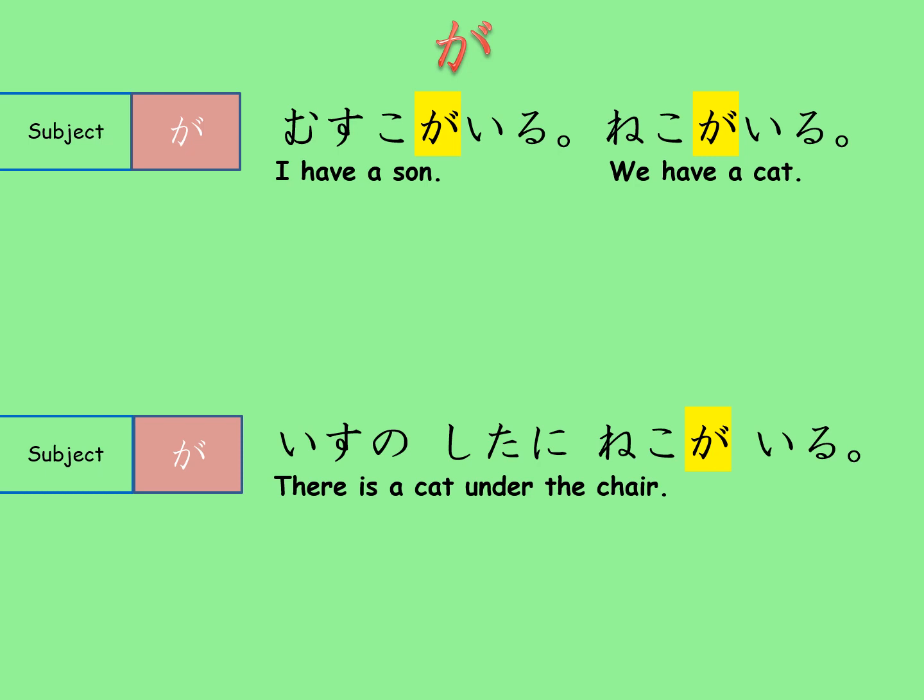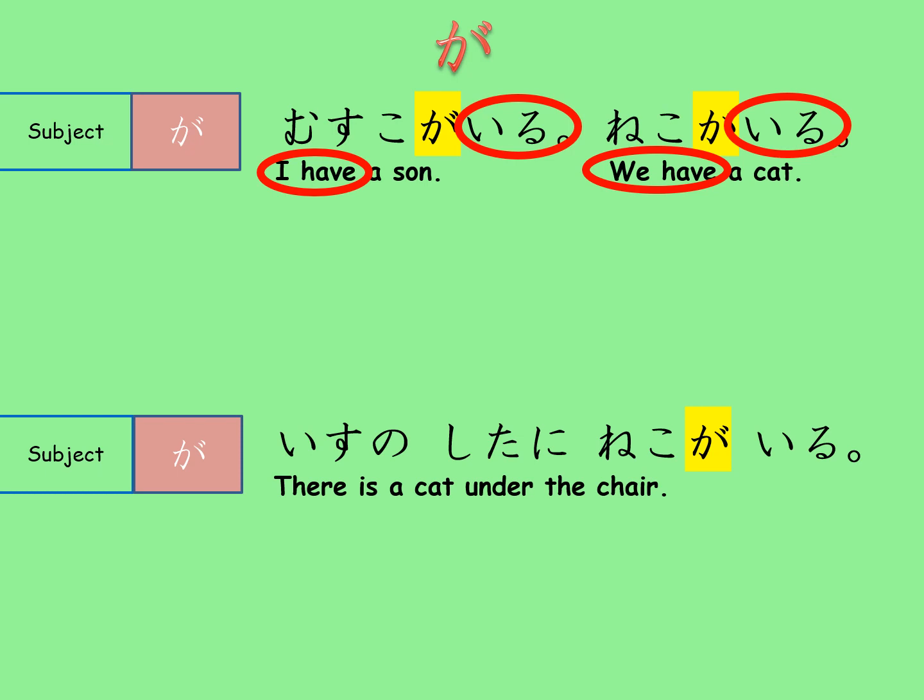When we talk about our family and pets, like 'I have a son' or 'we have a cat,' in English we usually start the sentence with the owner and use the verb 'have.' But in Japanese, this is expressed with the verb 'iru' or 'imasu,' which means 'to exist.' We use the subject marker ga and say 'musuko ga iru' and 'neko ga iru.' Here, the focus is still on the implied topic — in these cases 'I' or 'we' — not the subject musuko or neko.